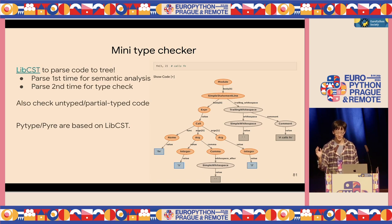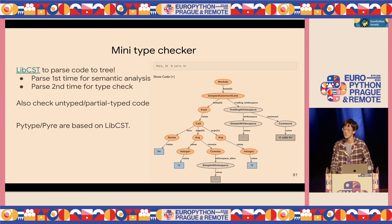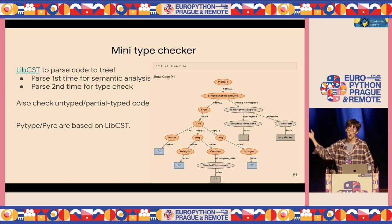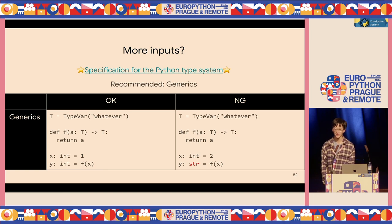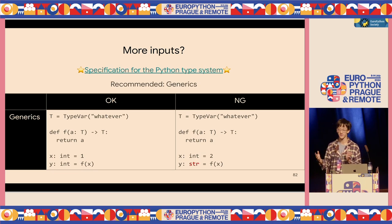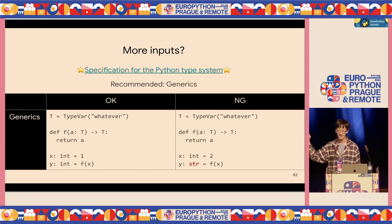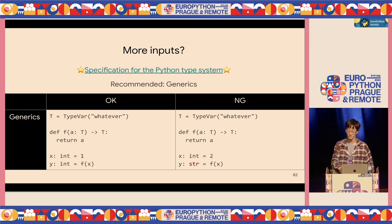For the mini type checker's implementation, I recommend a library called libCST — it's also used by PyType and MyPy. libCST parses your code into a tree, and you traverse it twice: first for semantic analysis, then for type checking. That's exactly what MyPy does to support self-type. If you want a challenge, try supporting generics — it's tricky because you need to parse the code twice: first to collect type information, then to use that information to check the type.